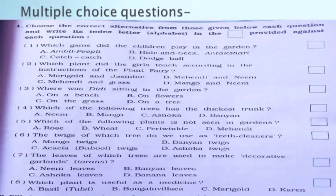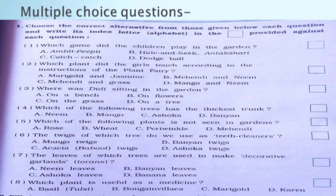I think you understood the lesson. Now, here, I am giving you homework. The first question is: choose the correct alternative from those given below each question and write its index letter alphabet in the box provided against each question. First question is: which game did the children play in the garden? Four options are here. You have to find out which is the right answer.